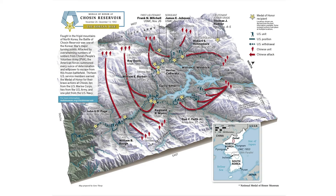This technique works best generally on large-scale maps where height variations are significant and noticeable. For this presentation, I'll be using a map created outside of work for the Medal of Honor Museum, showing the locations of where Medal of Honor recipients were cited for having distinguished themselves in the fighting around the Chosin Reservoir during the Korean War.